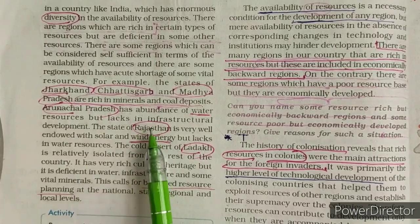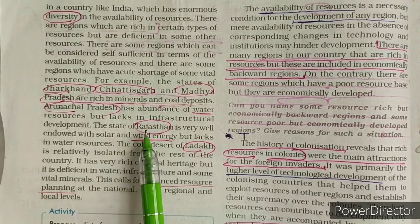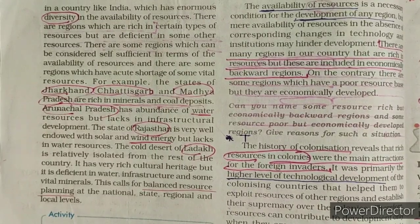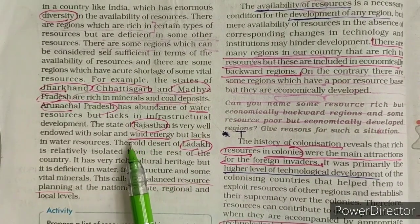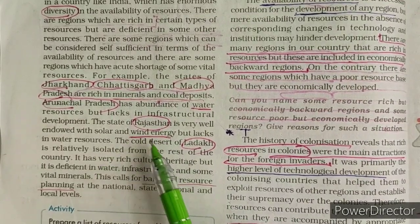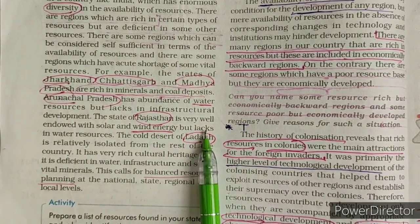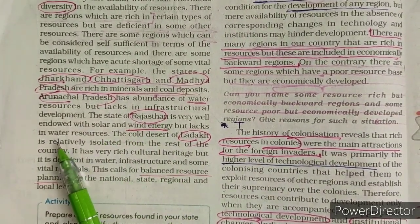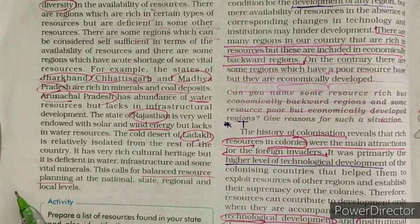Rajasthan and Gujarat have a very large capacity to produce wind energy and solar energy. If we set up wind and solar energy plants there, it will be helpful for India. However, Rajasthan is very well placed for wind and solar energy but has a shortage of water, so we need to provide them both water and technology for wind and solar energy.